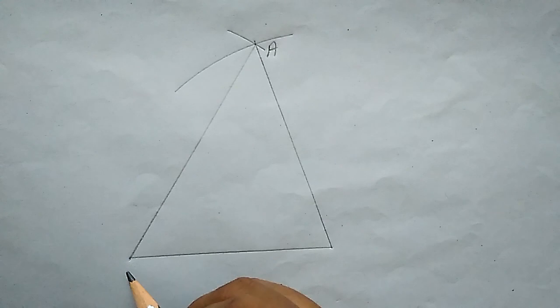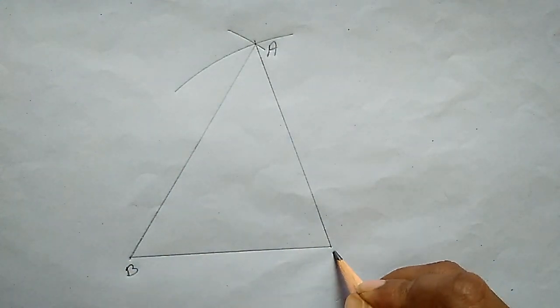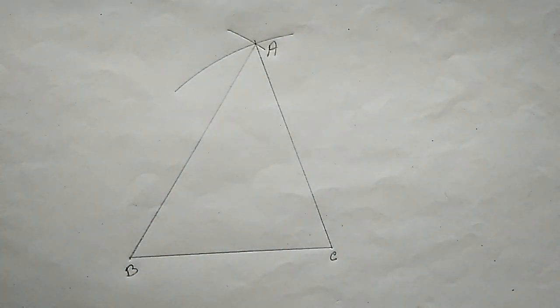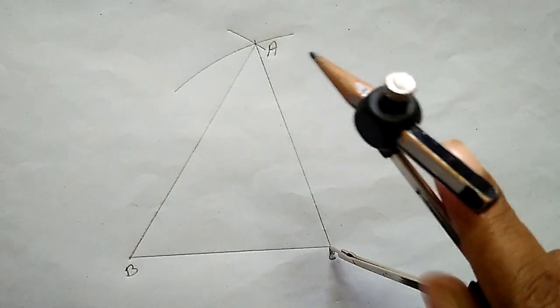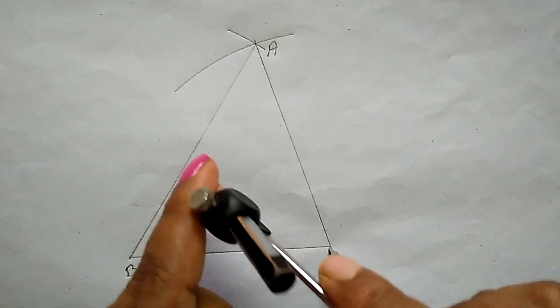This is triangle ABC. To draw a circumcircle, we have to draw perpendicular bisectors of two sides.